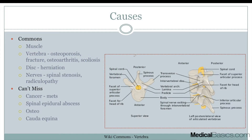The first thing we're going to talk about are the different causes, broken down into commons and can't-misses. For commons, I'm using an outside-in approach. First is any type of muscle or soft tissue damage, then the vertebra — causes like osteoporosis, fracture, osteoarthritis, or scoliosis. Then the actual discs, with things like herniation, and moving into the nerves, things like spinal stenosis or radiculopathy.